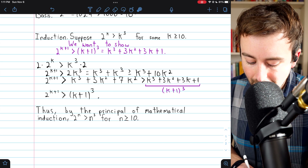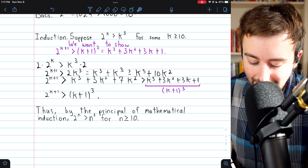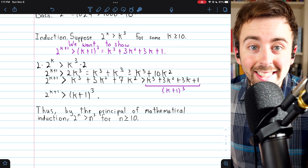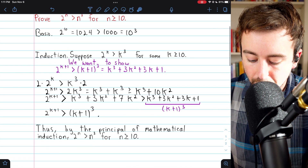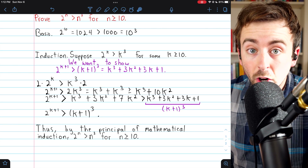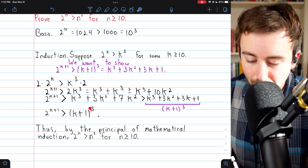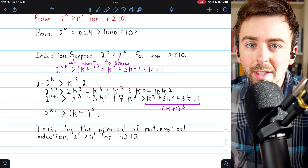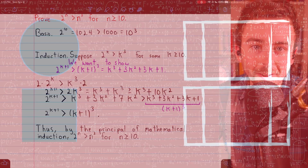By the principle of mathematical induction, we've shown that 2 to the n is greater than n cubed for n at least 10. We proved that it's true for the first value, n equals 10, and then showed that if it's true for one value, it has to be true for the next. Hope this was helpful — let me know in the comments if you've got any questions or video requests.